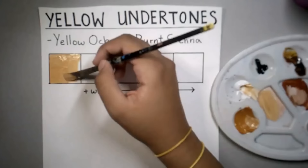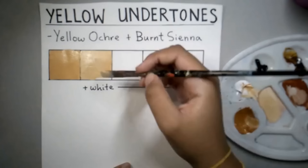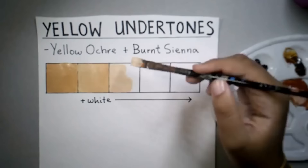Obviously there are about a thousand skin tones in between the ones I'm mixing and painting in the little boxes. I just tried to generalize it and show five to eight boxes to illustrate the main range.